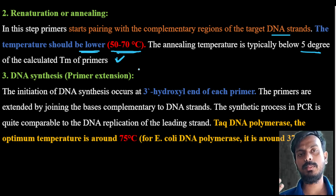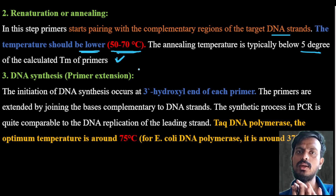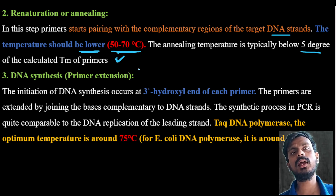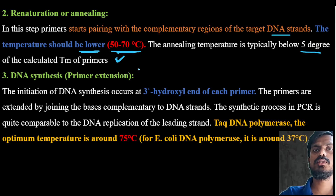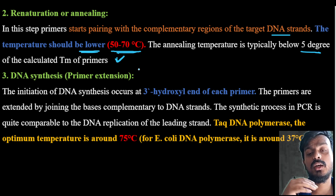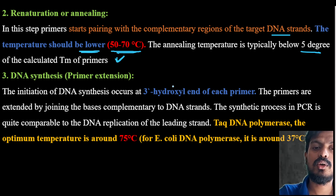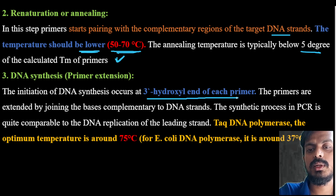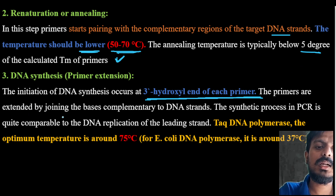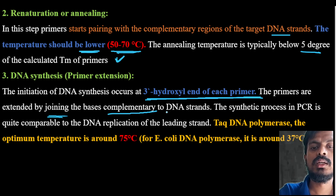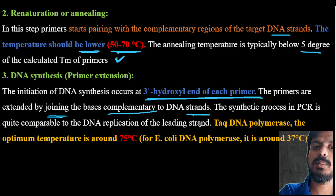After annealing, we have to raise the temperature again for synthesis of the complementary strand. The initiation of DNA synthesis takes place at the 3-prime hydroxyl end of each primer. The primers are then extended by joining complementary bases to the DNA strand. The synthesis process in PCR is comparable to DNA replication of the leading strand.